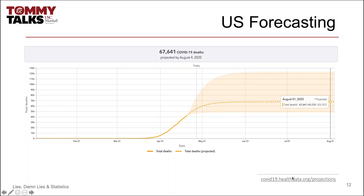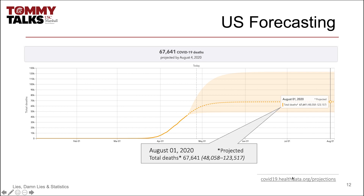Let's take a look at models within the US. According to a widely respected model, US COVID-19 deaths are predicted to reach about 67,641 by the beginning of August this year. But notice the shaded area around the projection — this indicates the level of uncertainty in the prediction. The model indicates that, although the point prediction is 67,641 deaths, it is very likely that the ultimate result is somewhere between 48,058 and 123,517. This is a very large range, and it speaks volumes about how much is known and unknown about this virus.